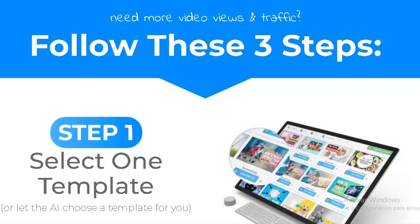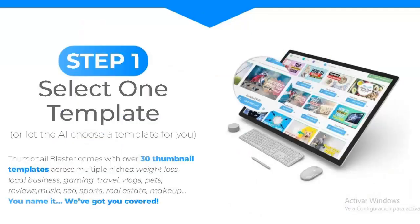Thumbnail Blaster comes with over 30 thumbnail templates across multiple niches — weight loss, local business, gaming, travel, blogs, pets, reviews, music, sports, real estate, makeup — you name it, we've got you covered. Step two: click edit, customize, or let the AI customize the template for you.